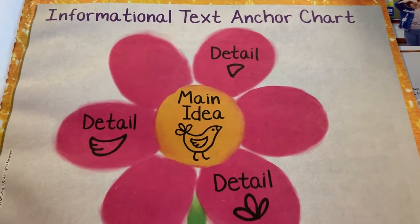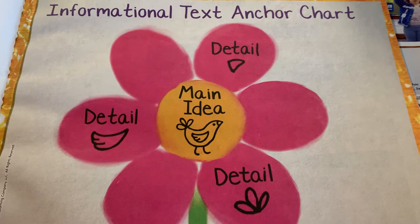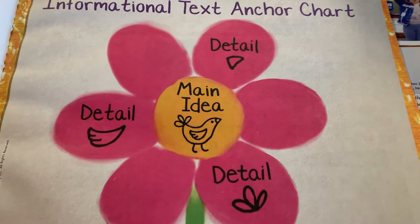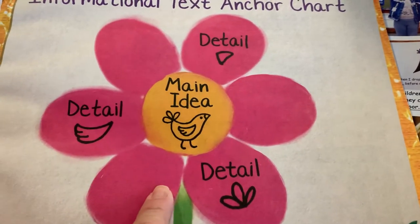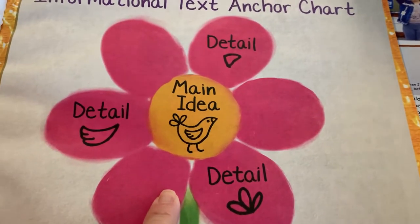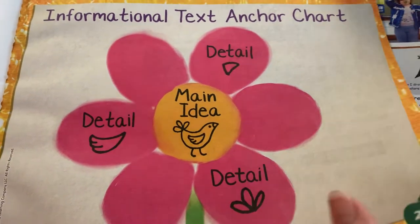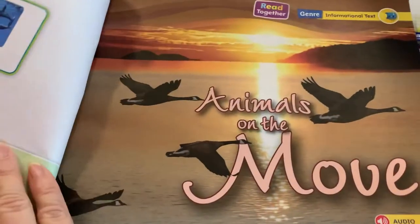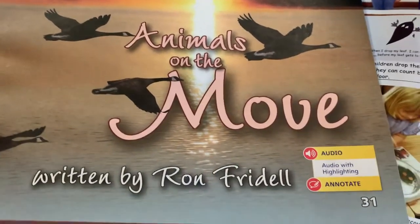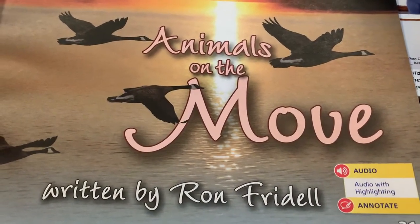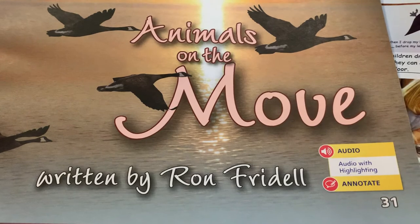So whenever we do informational writing, you could always use a flower as a graphic organizer to help you organize your thoughts. You are going to look at a story today called Animals on the Move, which is an informational text.